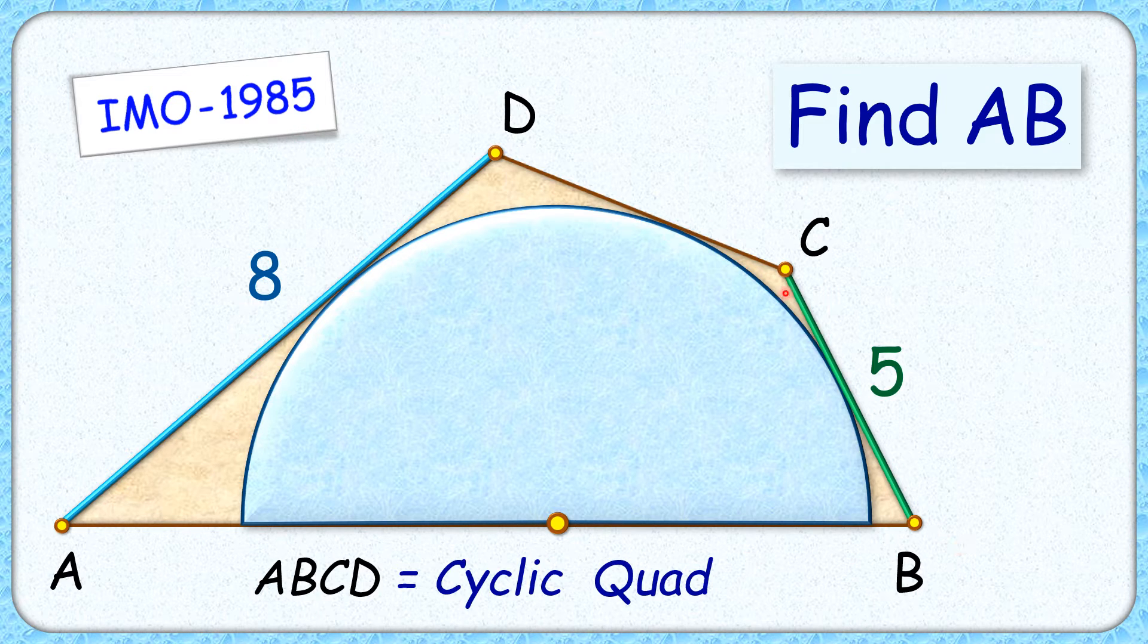Given to us, ABCD is a cyclic quadrilateral with lengths AD and CB as 8 and 5 centimeters. It has a semicircle inscribed in it as shown. With this given data we have to find the length of line segment AB.